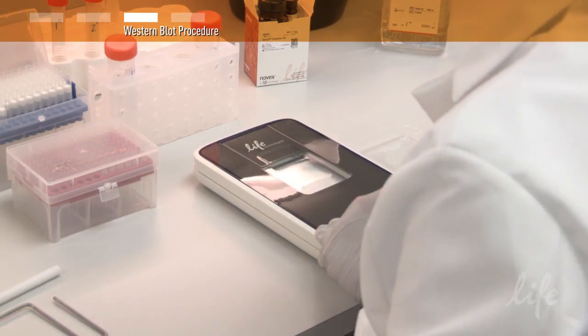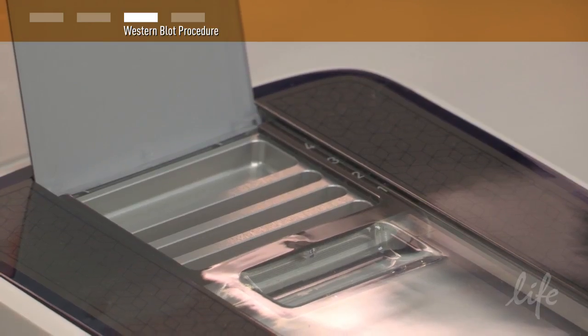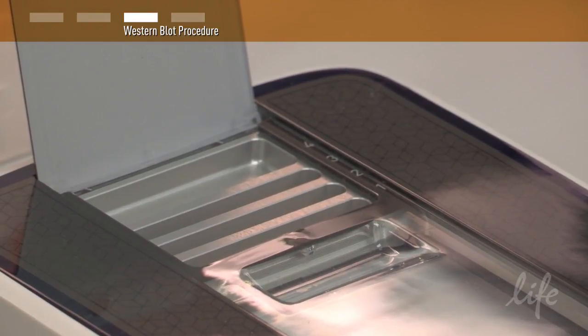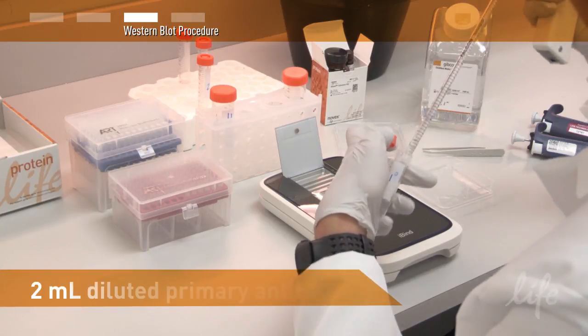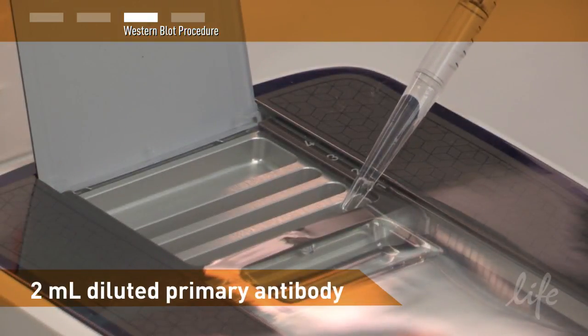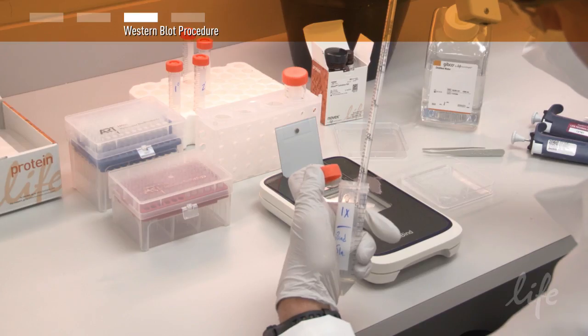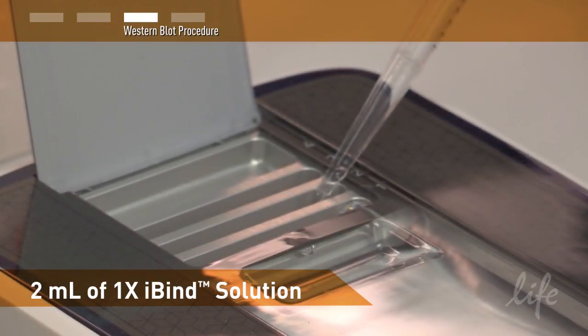Close the iBind device and open the lid exposing the wells. Add solutions sequentially to the iBind wells starting with well number 1. Load 2 milliliters of the diluted primary antibody into well 1. Then load 2 milliliters of the 1X iBind solution into well 2.